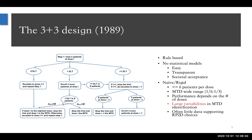Depending on how many additional DLTs are observed in the total of six patients, the 3+3 provides reasonable decisions — either the dose is escalated or the trial is stopped and the MTD is determined. If there are more than one DLT out of three patients, the decision is to de-escalate to the lower dose, or if the current dose is already the lowest, to stop the trial. The rules of the 3+3 design go up to six patients. If you want to enroll the 7th, 8th, or 9th patient, the 3+3 design doesn't give you any guidance, and the trial will almost always stop with no more than six patients treated at any given dose.